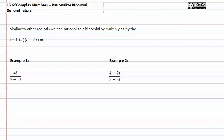In this last video for section fifteen, we need to know how to rationalize binomial denominators. Similar to other radicals, we can rationalize a binomial by multiplying by the conjugate.